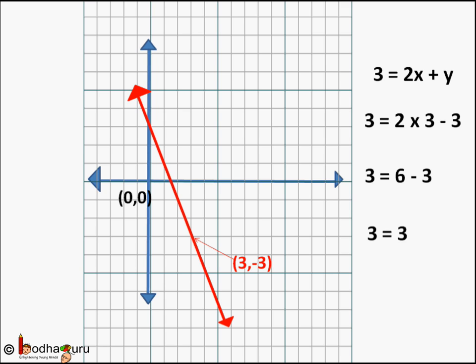By drawing the line using two values of x and y, we can find all values of this linear equation with two variables. Remember it has an infinite number of values, as all the points on this line satisfy the linear equation.